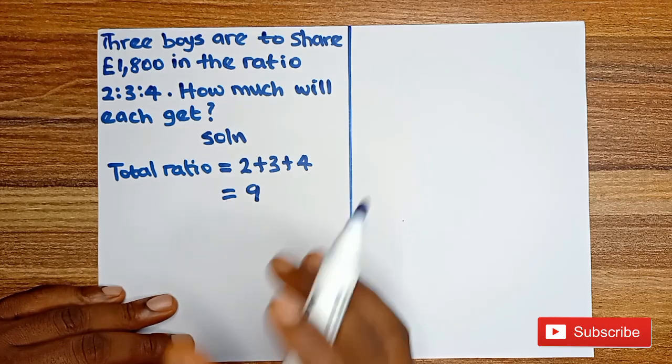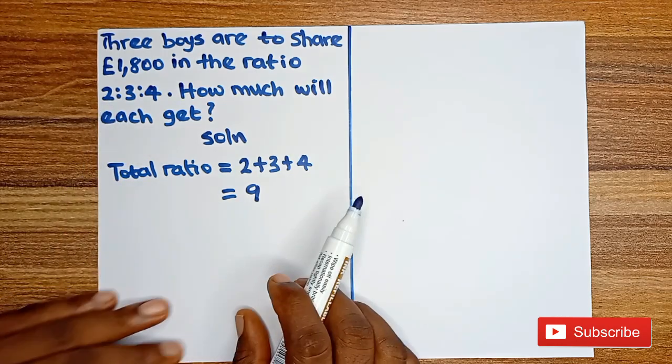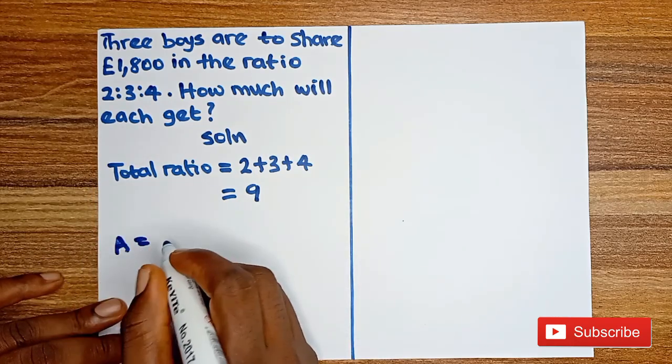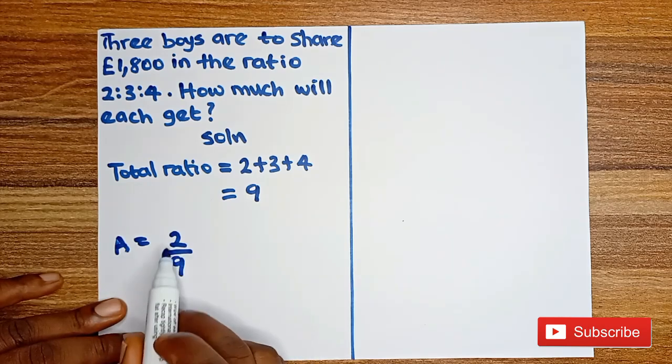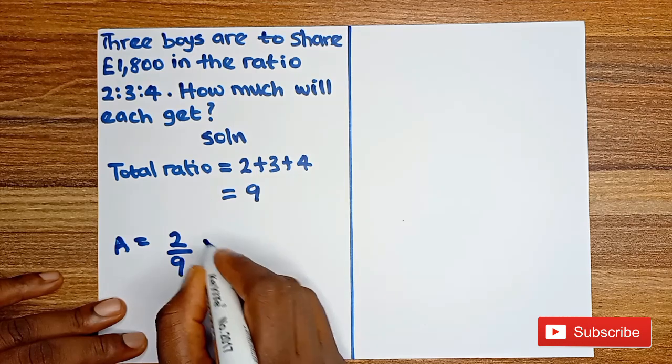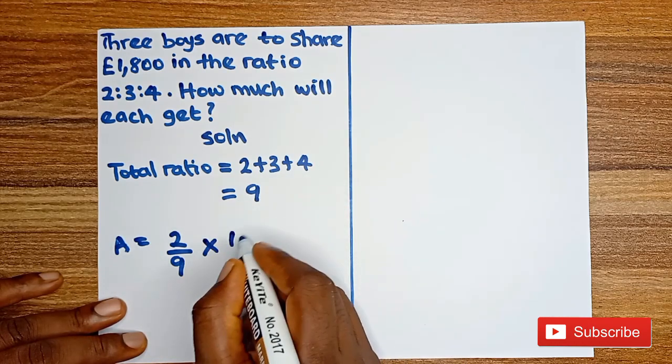So for us to know how much each boy will collect, we divide each of these ratios by the total ratio. Let's call the first boy Boy A. He's going to take 2 over 9. 2 is the ratio for Boy A and 9 is the total ratio, multiplied by the amount to be shared. What is to be shared is £1,800 over 1.